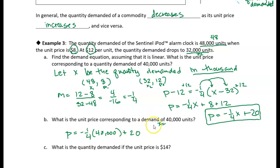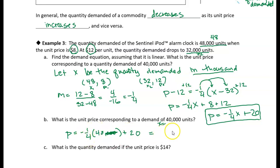I have to be careful — I defined x to be in thousands. So I made a mistake putting 40,000; it's just 40. Negative one-fourth of 40 gives minus 10, and minus 10 plus 20 gives positive 10. So the price is $10. When the price is $10, we should expect a demand of about 40,000 units.